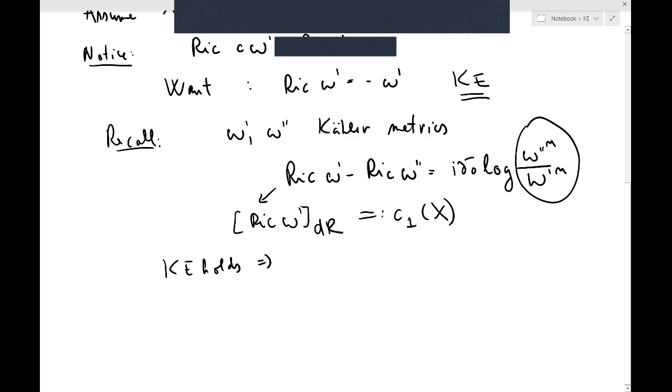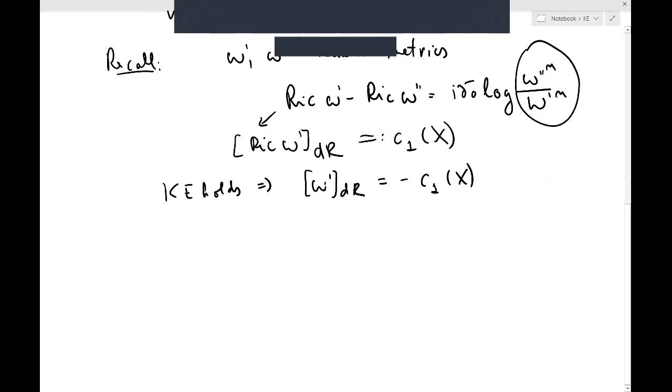So let's assume that KE holds. This implies that the cohomology class of your Kähler-Einstein metric has to be negative of c_1(X).